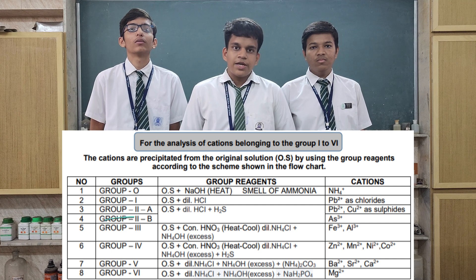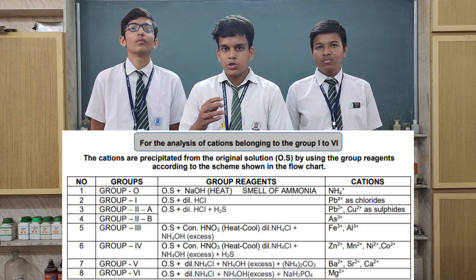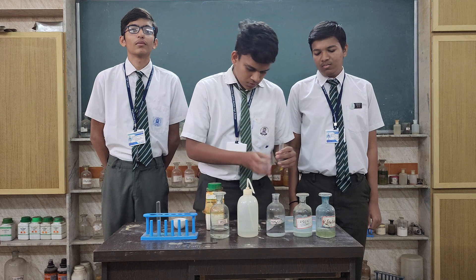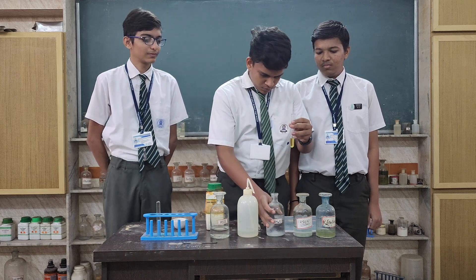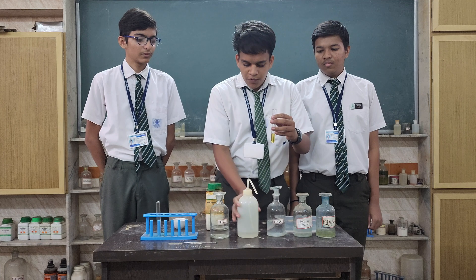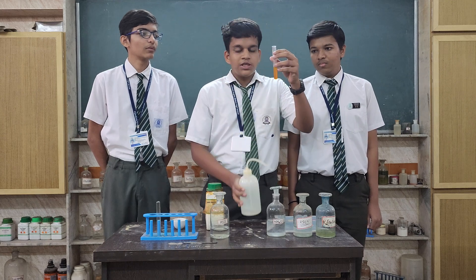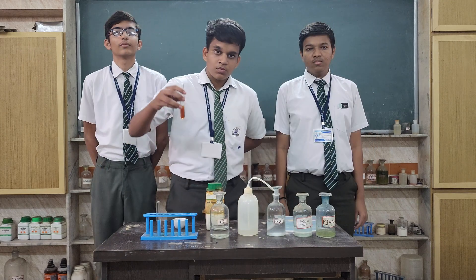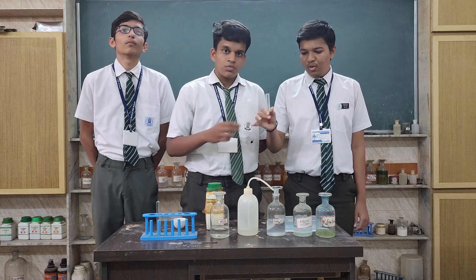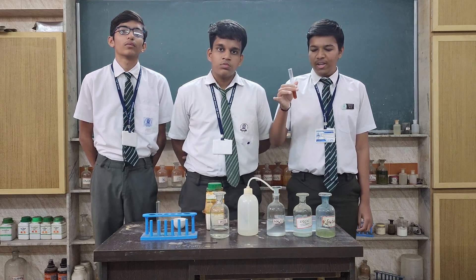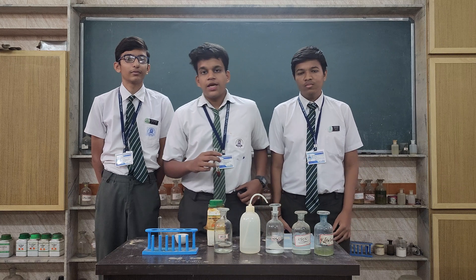For the confirmatory test of Group 3 cations, NH₄Cl (NFO-CL) is added to the original solution, which gives a yellow-brown precipitate. The addition of NH₄Cl and NH₄OH gives a brown precipitate, which indicates that Group 3 is present.